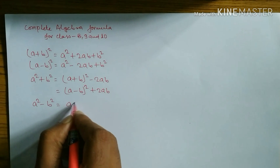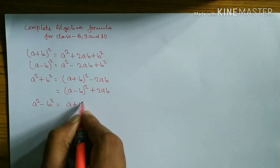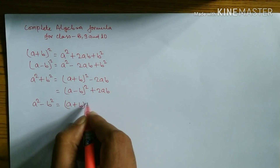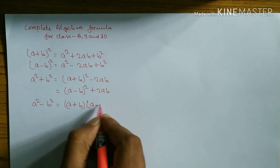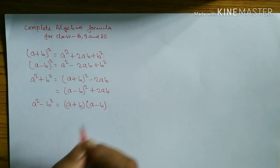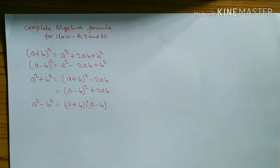The next formula is a² - b², and the formula is (a + b)(a - b). Next, we move on to cube formulas.